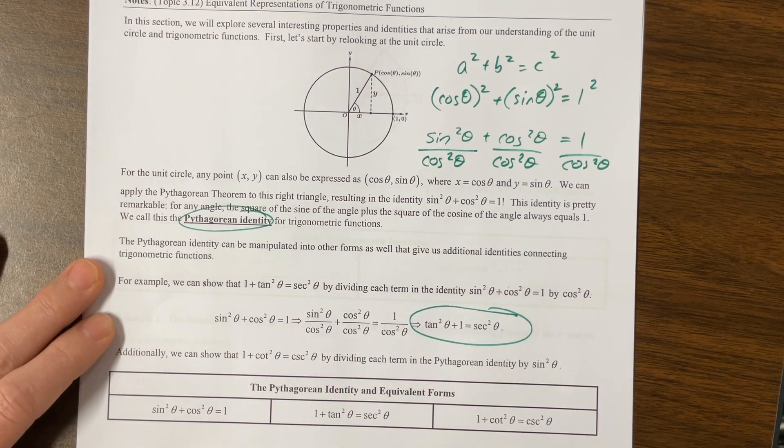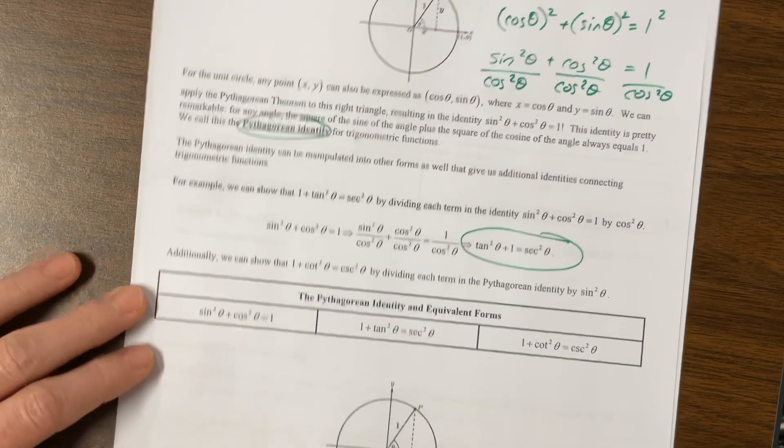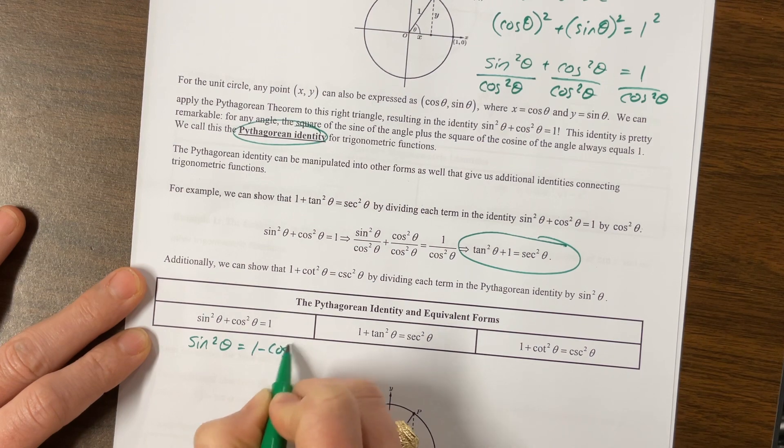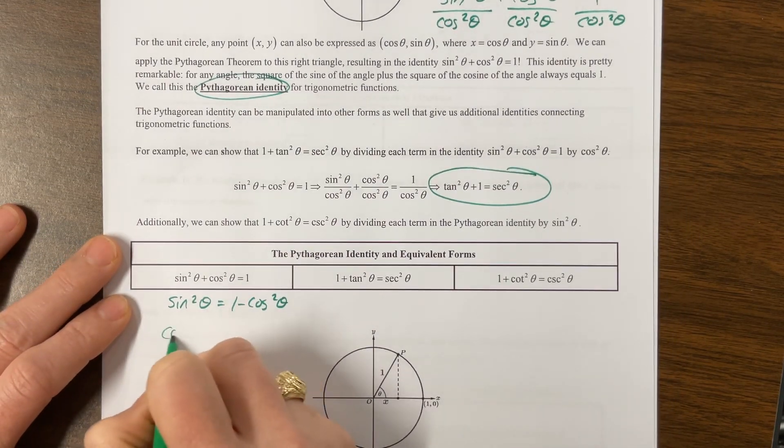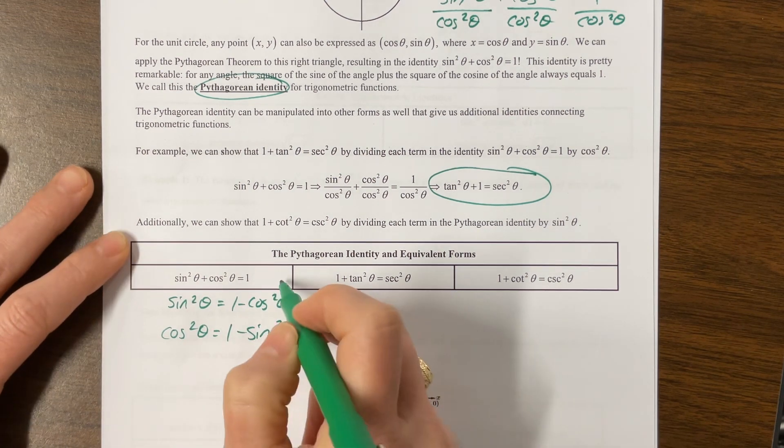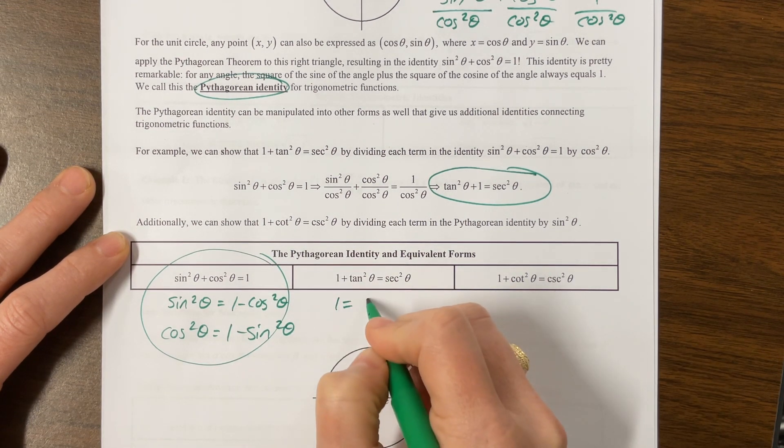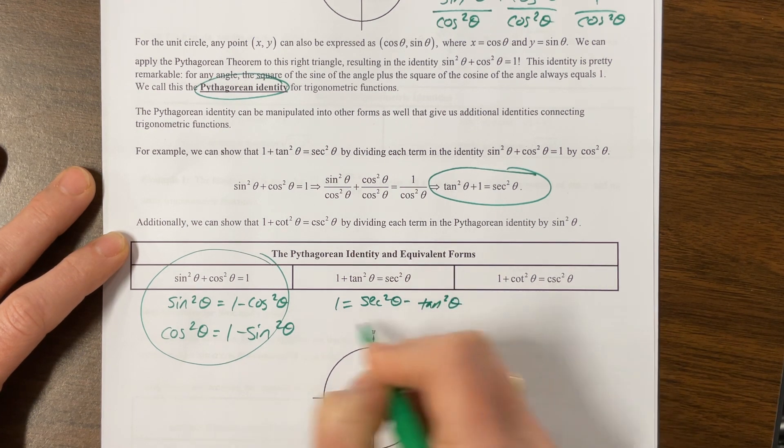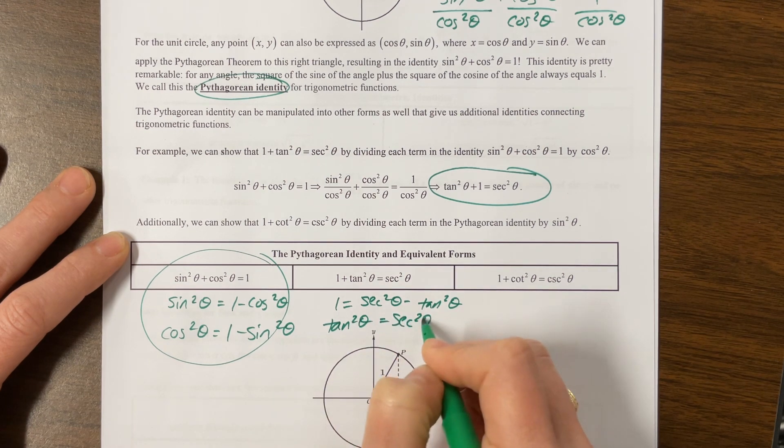I also will manipulate with my kids when I teach this. I'll come through and say, okay, let's solve this for sine squared. So that's 1 minus cosine squared. And then I will say, let's solve this for cosine squared, which is equal to 1 minus sine squared. And so we kind of have three versions of that same identity. And then we can do the same thing here. This is 1 equals secant squared theta minus tangent squared theta. Or we can say tangent squared theta is equal to secant squared theta minus 1.